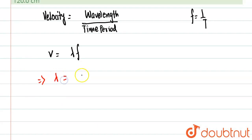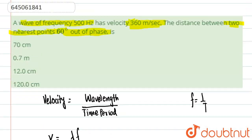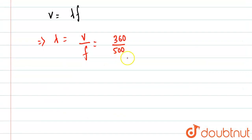So lambda is wavelength and v is velocity divided by f which is frequency. So velocity is basically 360 m/s divided by frequency 500 Hz. You can see in the question itself it's given. So now we will just leave it like this because it may get cancelled in the future.